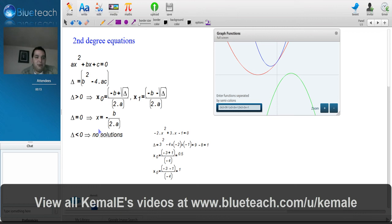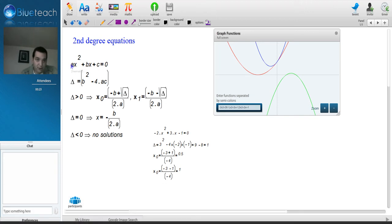Hello, today we're going to see how to solve second-degree equations. A second-degree equation of x is an equation that looks like ax² + bx + c = 0.